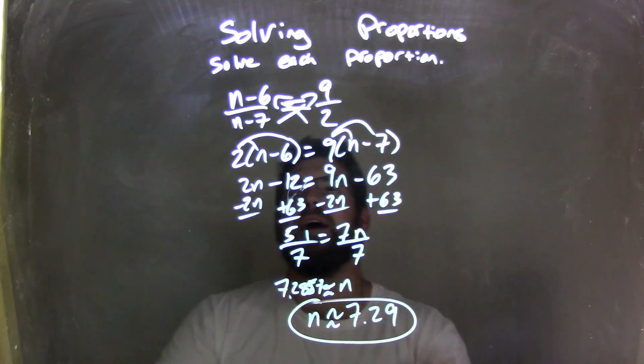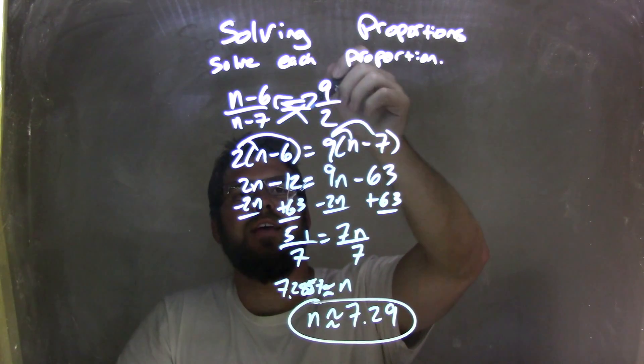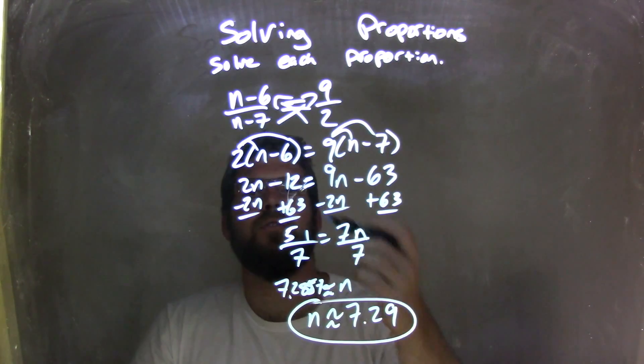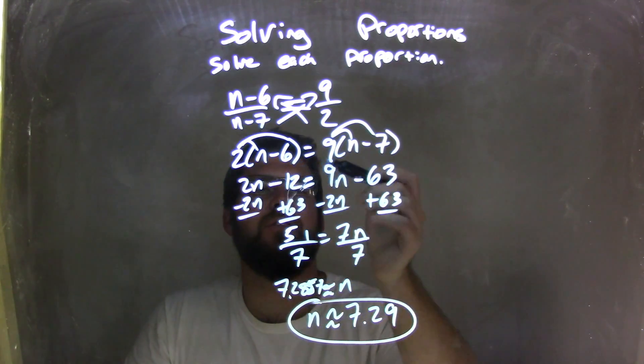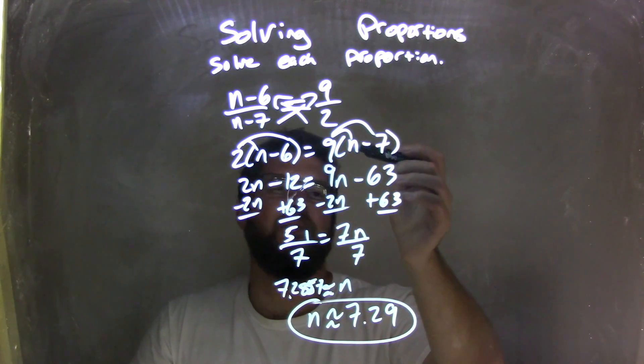So let's recap here. We had n minus 6 over n minus 7 equals 9 over 2. Cross-multiplied, giving me 2 times n minus 6 equals 9 times n minus 7.